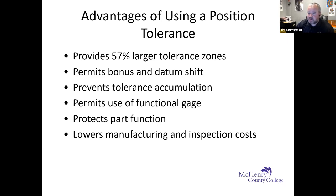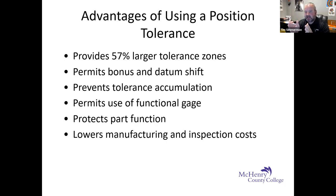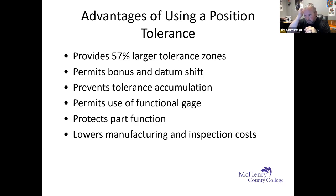Positional tolerances prevent tolerance accumulation or tolerance stack-up. For example, designing a block with multiple holes where somebody dimensions from one edge to the first hole, then hole to hole to hole. If you have a plus or minus 5 thousandths tolerance on each length dimension, by the time you get to the end you might be 15 thousandths out of spec. It checks good per the drawing, but from a functionality standpoint the last hole is so far out of location it won't assemble properly.